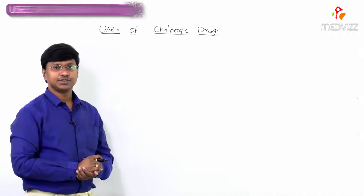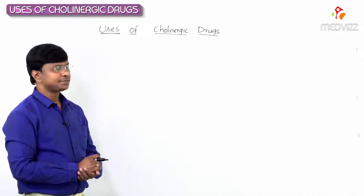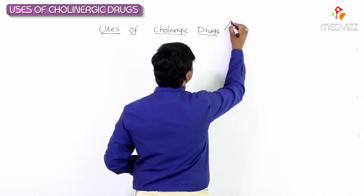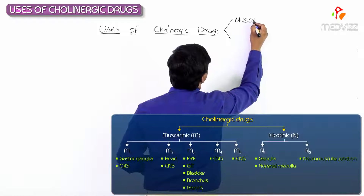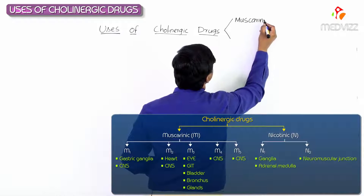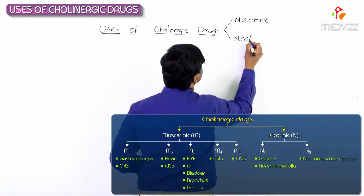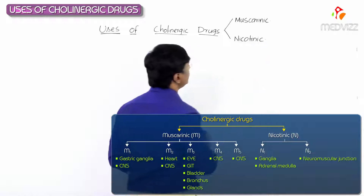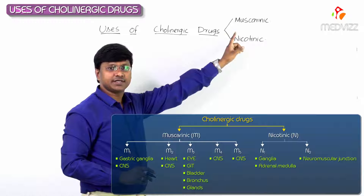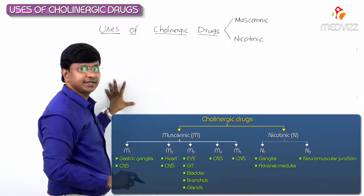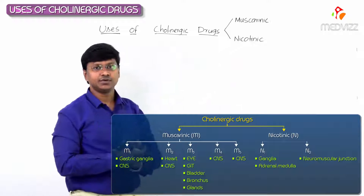Now let me discuss the uses of cholinergic drugs. These drugs have muscarinic action by acting on the muscarinic receptors, and they also have nicotinic action. Because of the action on the muscarinic receptors we have the muscarinic uses, and because of the action on the nicotinic receptors we have the nicotinic uses.